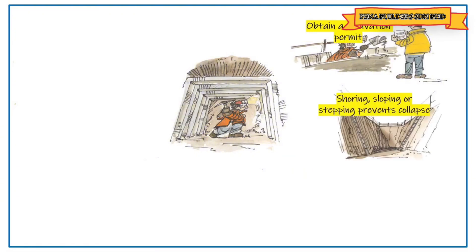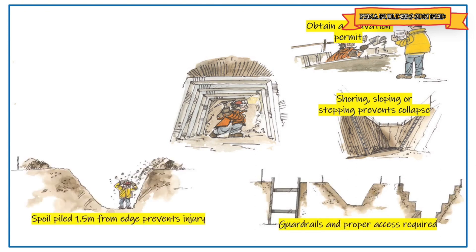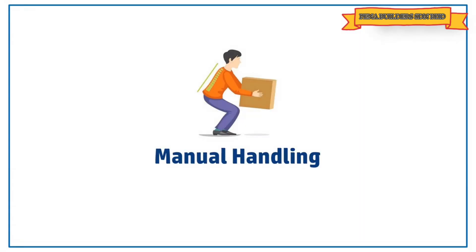Excavation safety: similar to confined space, obtain an excavation permit. Use shoring, sloping, or stepping to prevent collapse. Guard rails and proper access are required at excavation areas. Keep the spoil pile at least 1.5 meters from the edge to prevent injuries. Stay away from moving machinery near excavation areas.